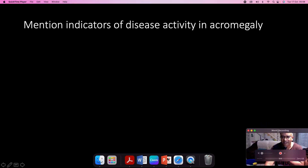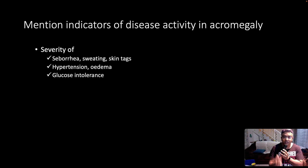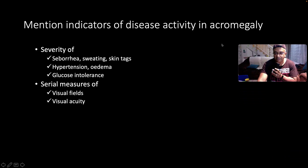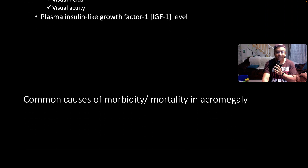A couple of questions. What are indicators of disease activity in acromegaly? Look at the severity of the seborrhea, the sweating and skin tags, hypertension and edema, and glucose intolerance. If those three are severe, it speaks to markedly increased disease activity. Also, when you do serial measures of visual fields — the typical cut being bitemporal hemianopia — is it getting worse? Check visual acuity. You can also look at the plasma insulin-like growth factor 1, the IGF-1 level.